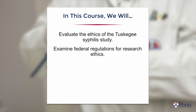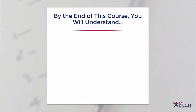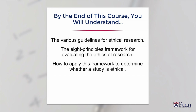We're going to dive down and look in depth at evaluating the risk-benefit ratio and informed consent. Finally, we're going to take all of our knowledge and apply it to a particular case to see how well you've understood the various elements of evaluating the ethics of research trials. What you should know by the end of this course are the various guidelines out there, the eight principle framework for evaluating the ethics of research trials, how to apply this framework, and then determine whether a research study is ethical or not.